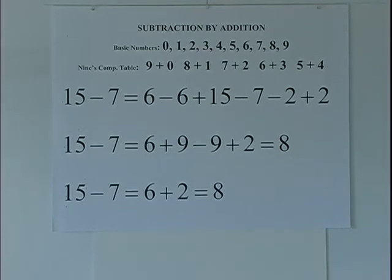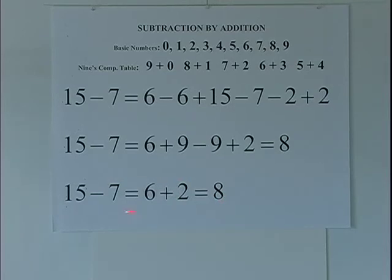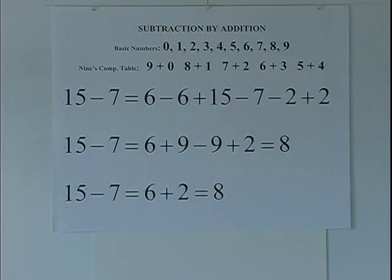Now we'll state our algorithm. The algorithm for subtraction by addition is: I will add the numbers in the minuend, 1 and 5, I get a 6. I will take the 9's complement of the subtrahend, which is 2, and add it to the 6. 6 plus 2 is equal to 8. So the algorithm for subtraction by addition, I did only one operation versus 4 for subtraction by subtraction.